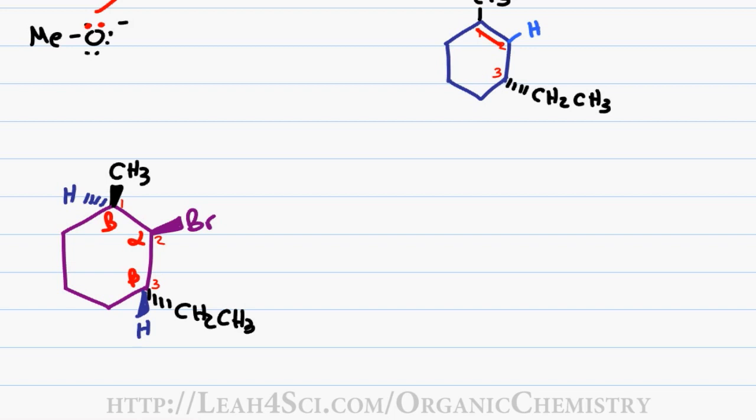Remember the trick: anti-coplanar is trans and axial so we'll start by identifying the leaving group. Bromine is up on carbon number 2 so we have to find a beta hydrogen that's down or trans. The hydrogen on carbon number 3 is also up making it cis to bromine and therefore not the hydrogen we can eliminate. But the hydrogen on carbon number 1 is down making it trans to bromine and as long as we can put this into a trans axial conformation, this is the hydrogen to eliminate giving me the product.